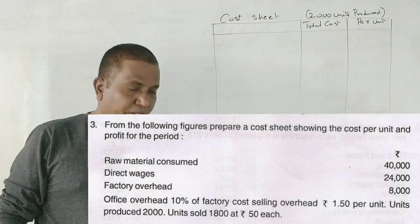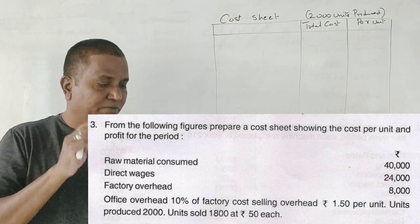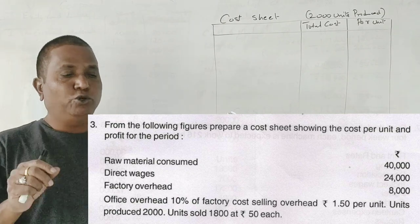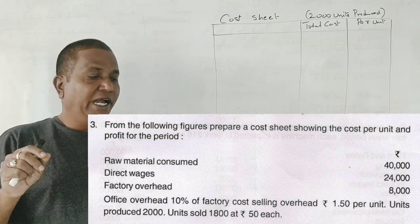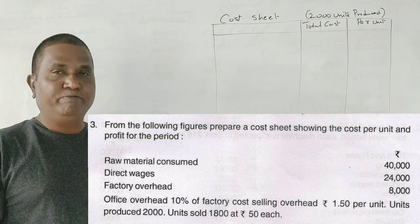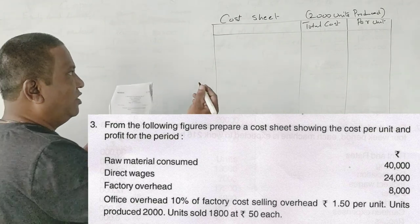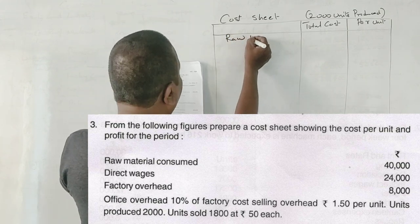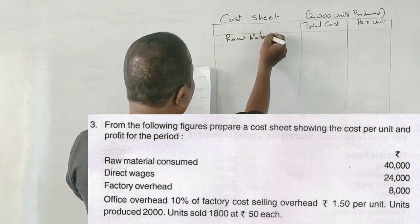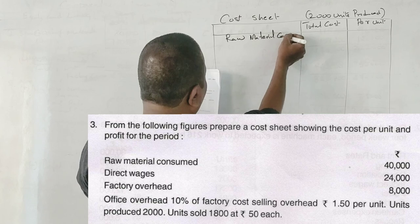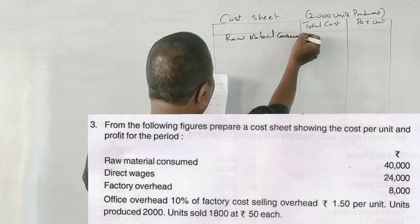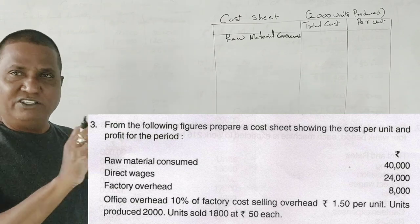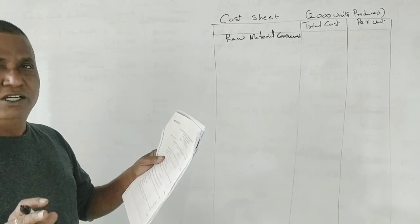From the 2017 question paper, we have a question for six marks: from the following figures, prepare a cost sheet showing the cost per unit and profit for the period. Now we will follow the same format - raw materials consumed. When you write raw materials consumed, or cost of materials, or direct materials, it is all the same.